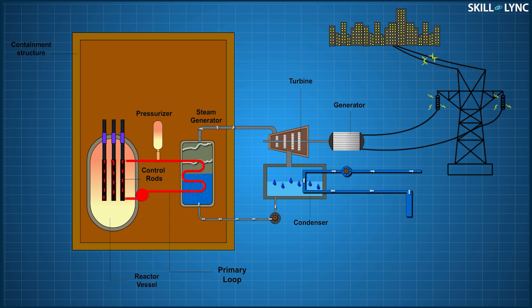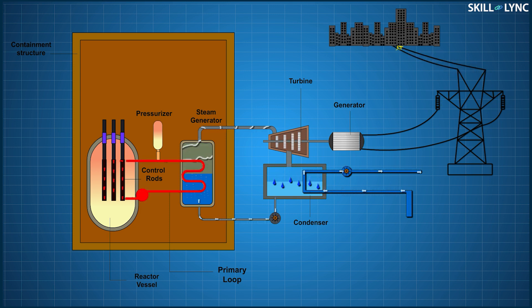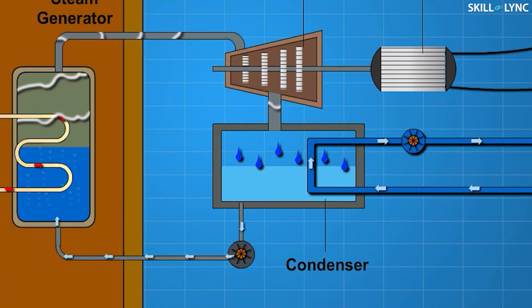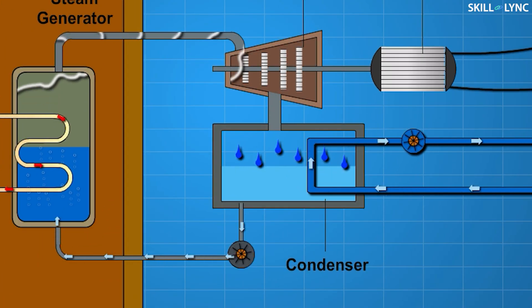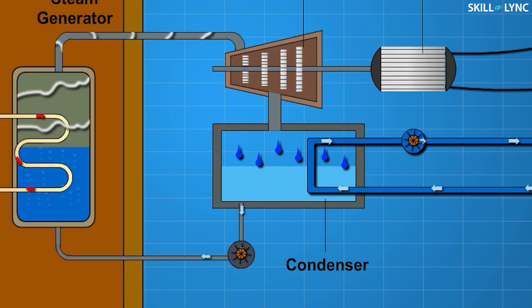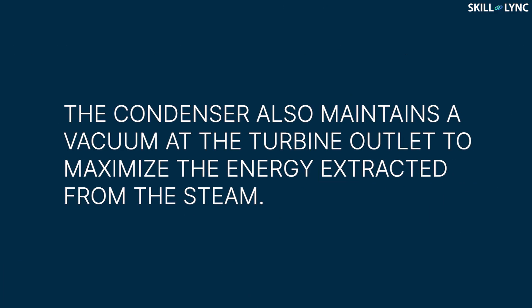The steam is then sent to drive a turbine, which in turn drives the generator. The secondary coolant or the steam is sent through a condenser to cool it down, and the water obtained is sent back to the steam generator. Apart from converting the steam into water, the condenser also helps in maintaining a vacuum at the outlet of the turbine. This causes a pressure drop in the turbine and hence the energy extracted from steam is maximized.